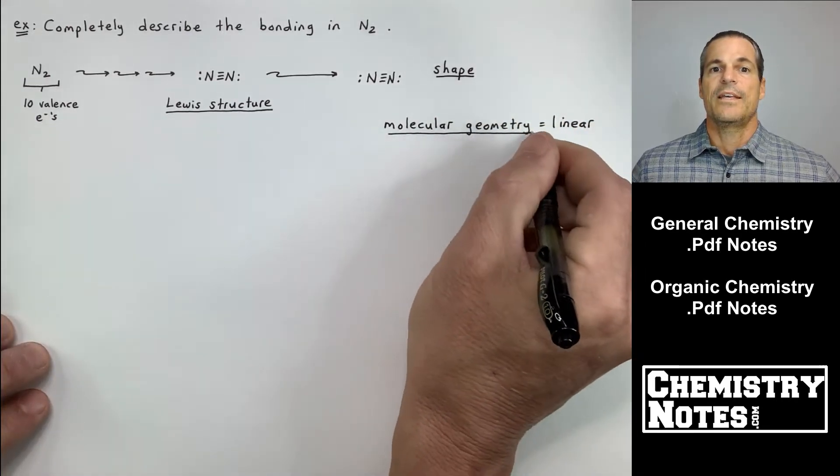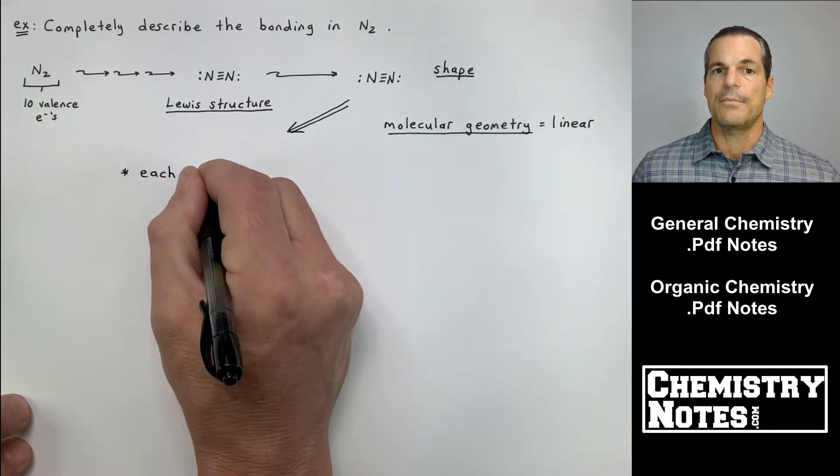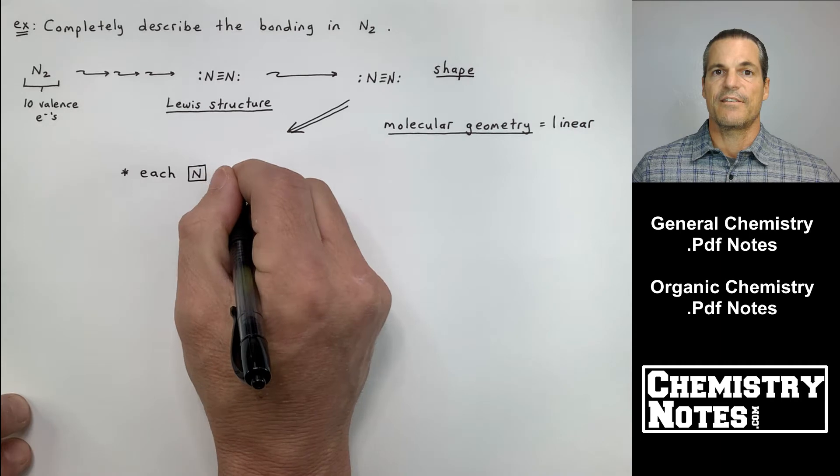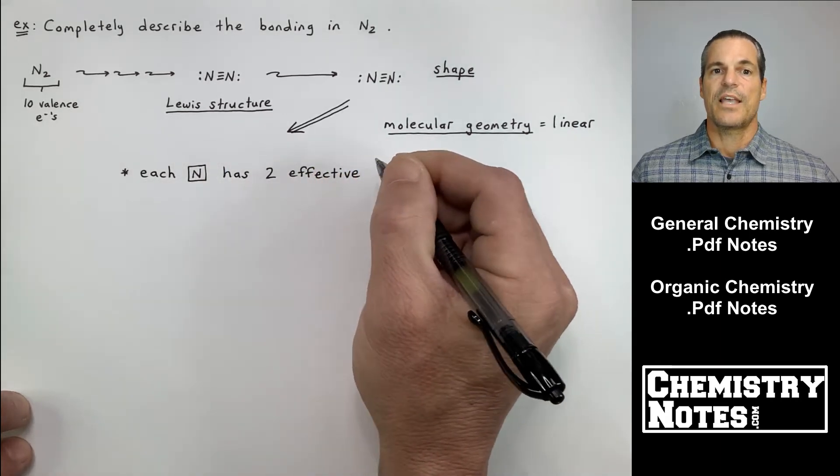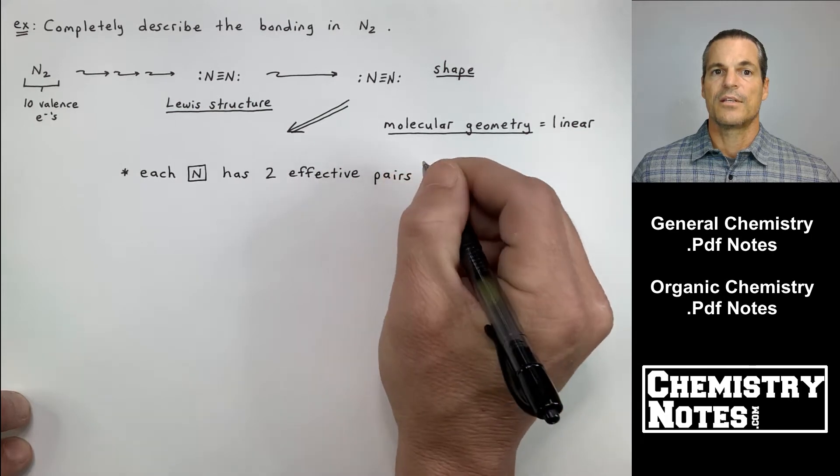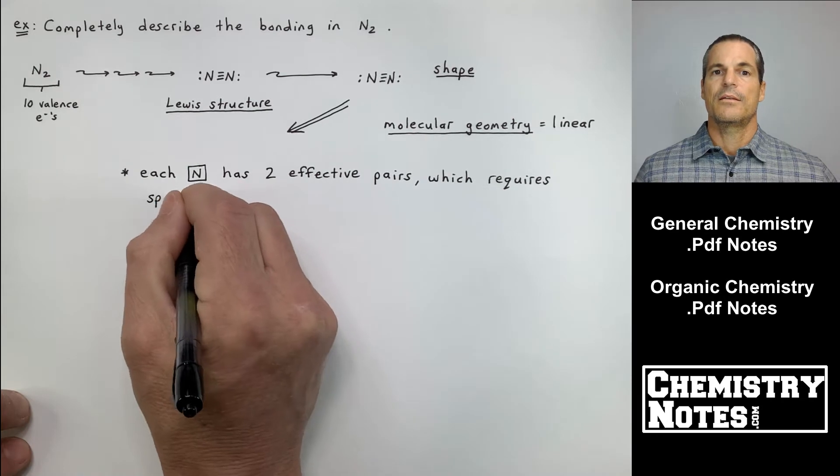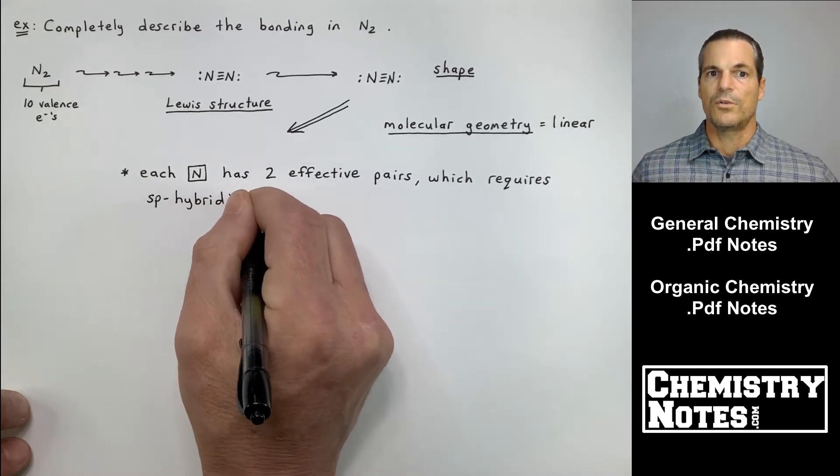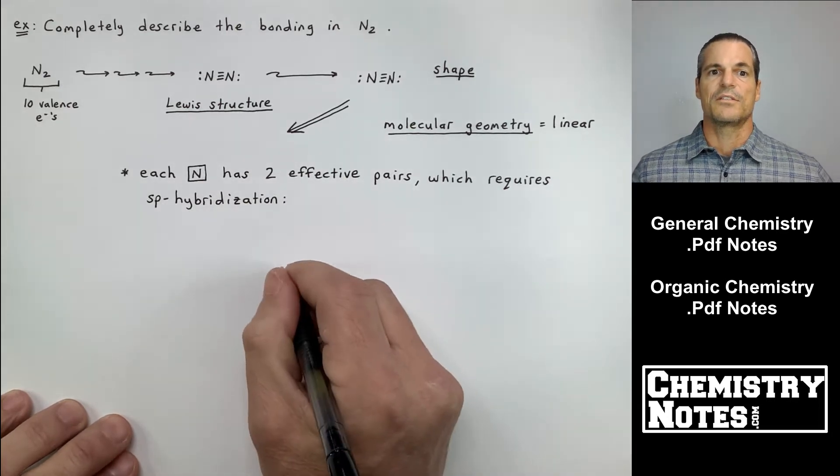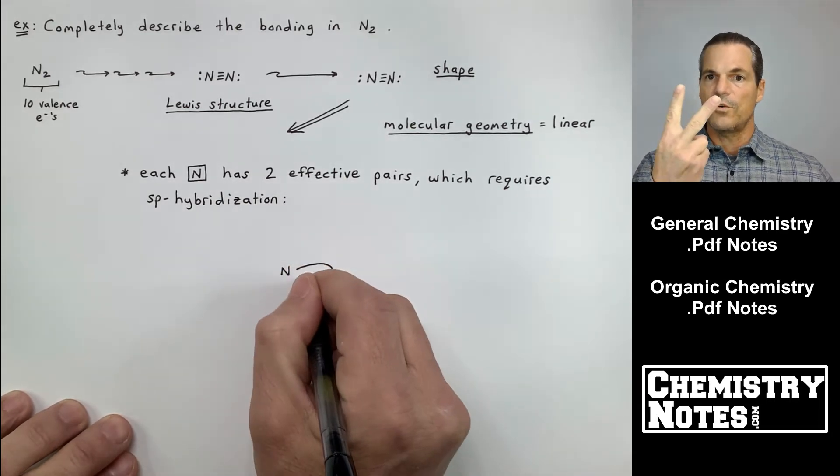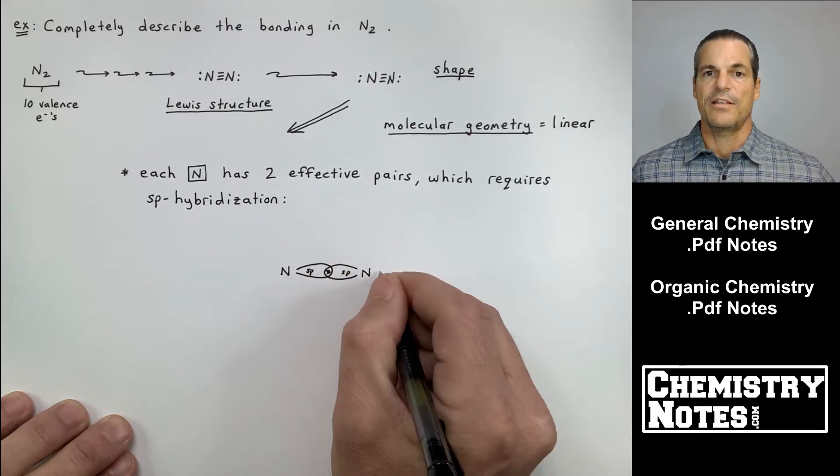So it is a molecular geometry of linear. There is no true central atom. Each nitrogen is effectively identical to the other one. And each nitrogen has two effective pairs. Each nitrogen has a triple bond to an N and a lone pair. That's two effective pairs, right? The triple bond just counts as one connection to nitrogen. So we have two effective pairs. That's an SP hybridization. See how that works?